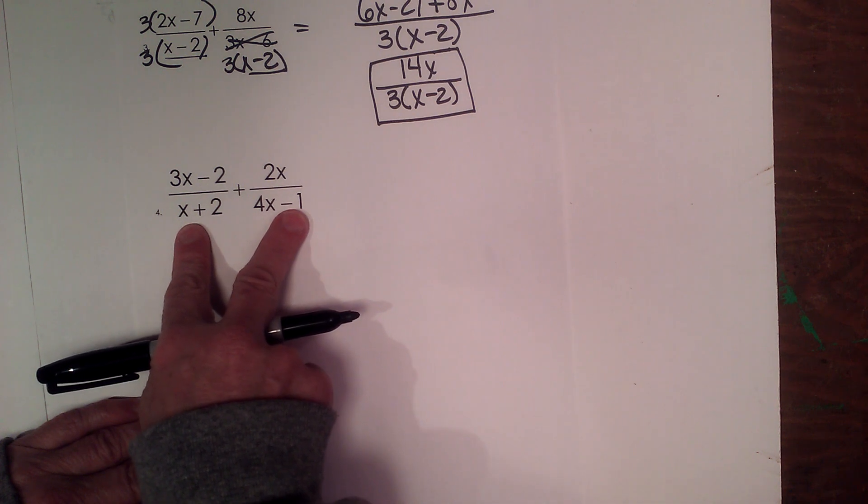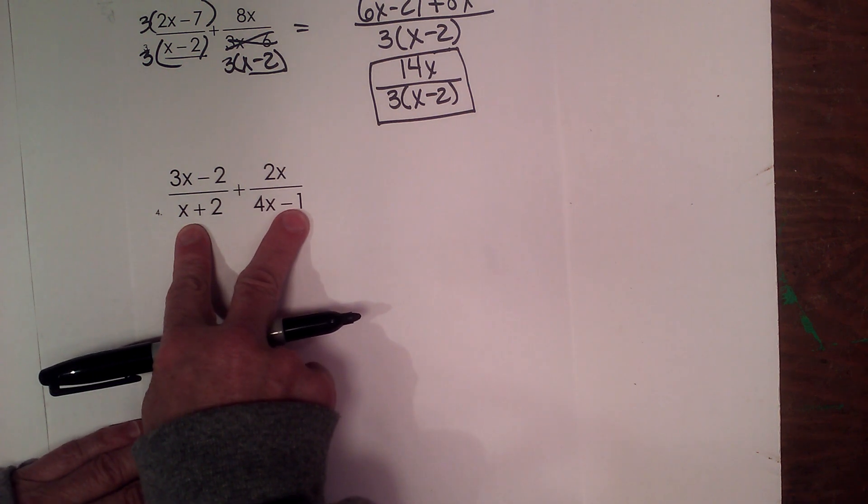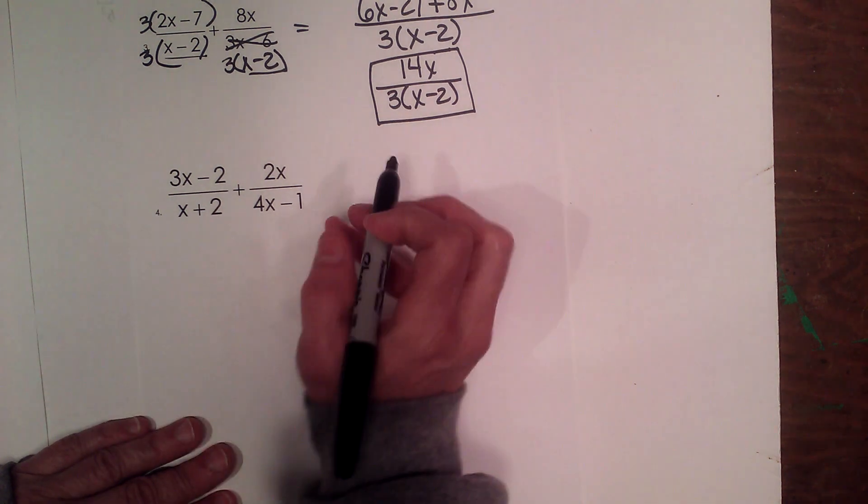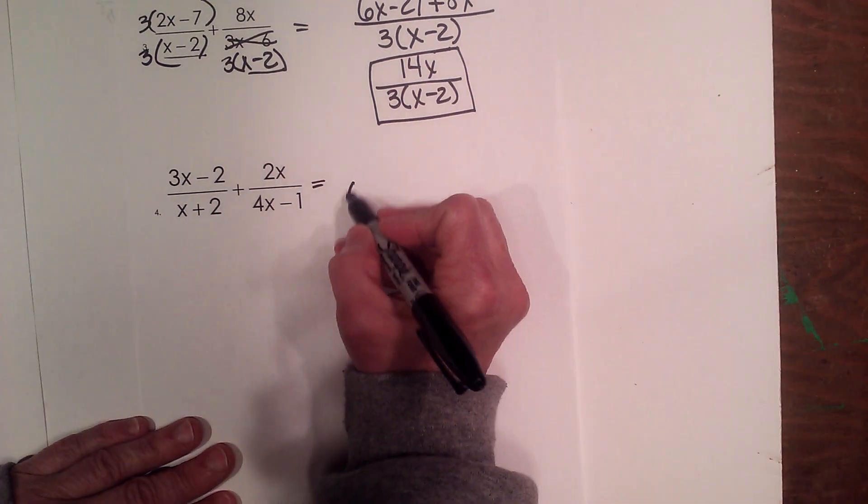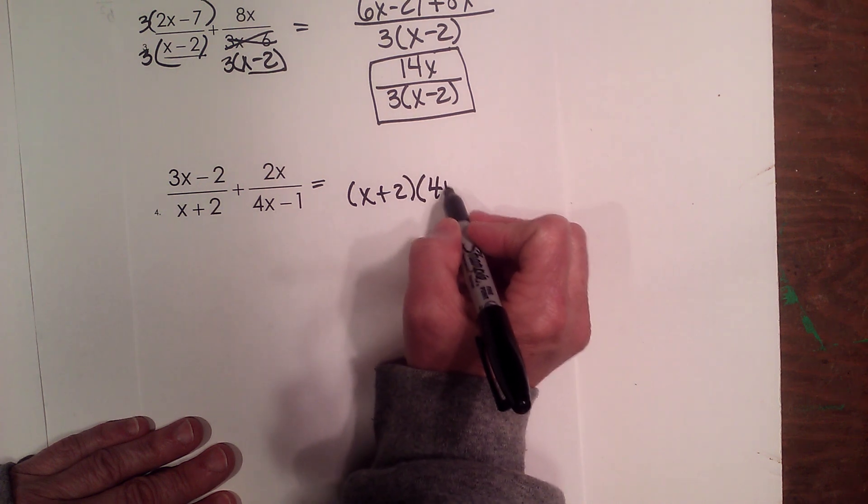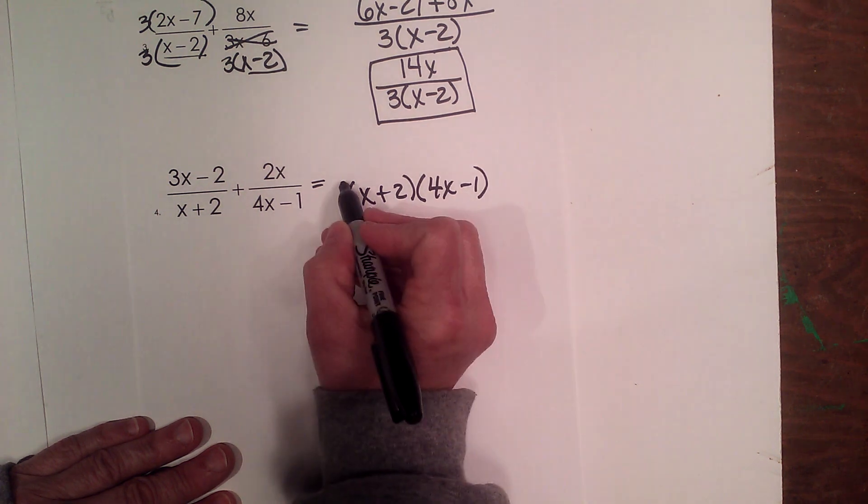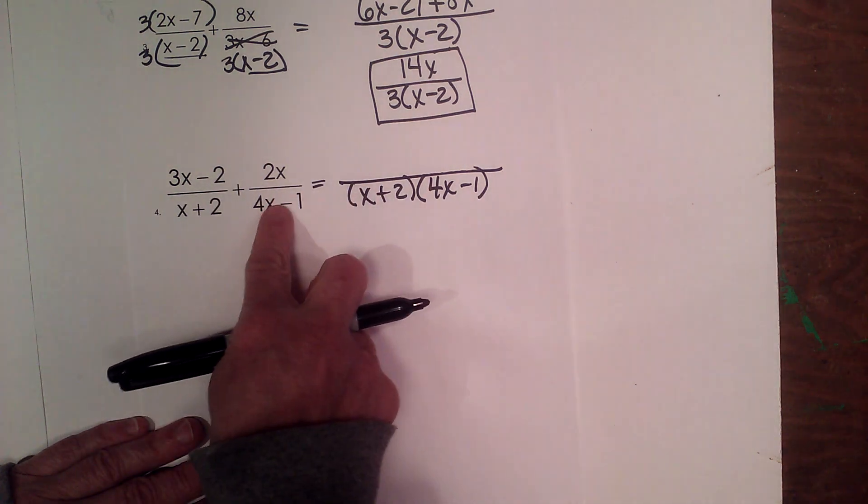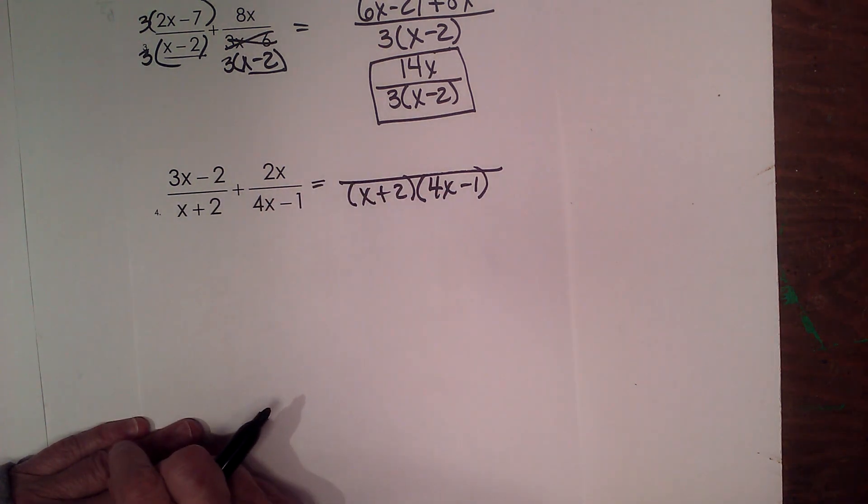Can we factor the denominator? And the answer is no, we can't factor anything out. That means my common denominator is going to be x plus 2 and the binomial 4x minus 1. Each one of these have to be represented in my common denominator.